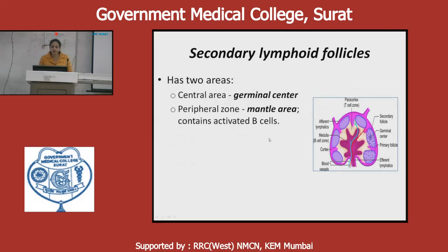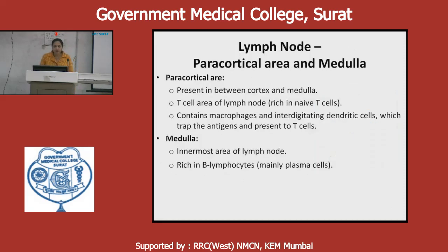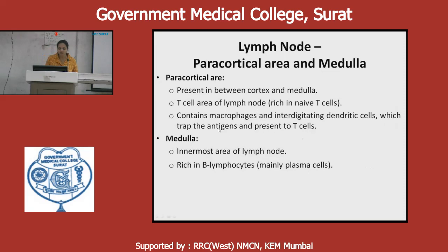In secondary lymphoid follicles there are two areas: a central germinal area and a peripheral mantle area containing activated B cells. The pericortical area is present between the cortex and medulla — it is a T cell area containing macrophages and interdigitating dendritic cells which trap antigens and present them to T cells. The medulla is the innermost part and is mainly composed of B lymphocytes, that is plasma cells.